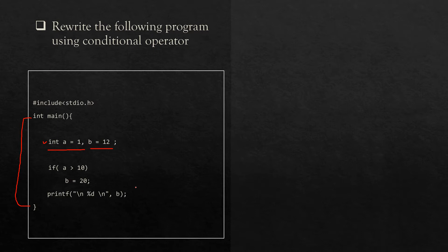From this program we can see that this is one kind of condition: if the value of variable a is greater than 10, then we have to assign the value of b with 20, then print out the b variable. We can convert this program using the conditional operator. If you don't know about conditional operator, there is a separate video on it, but in this program I will explain what it is and how it works.